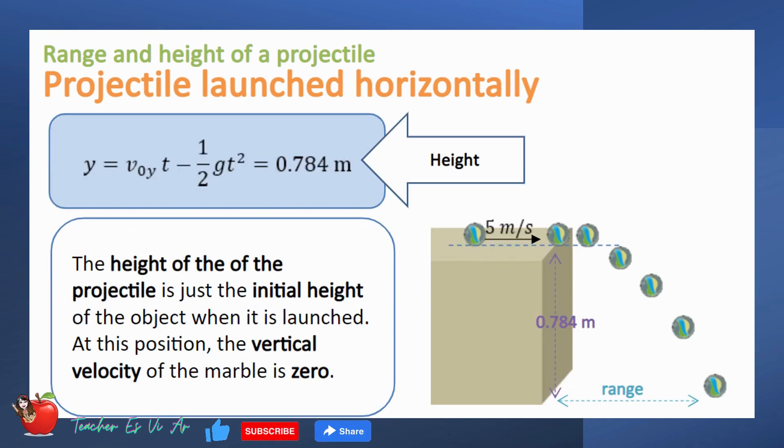The height of the projectile is just the initial height of the object when it is launched. At this position, the vertical velocity of the marble is zero. From the given information, let us try to determine the range of the projectile.